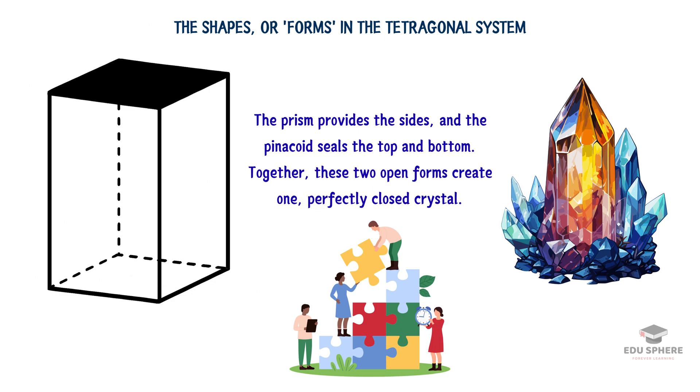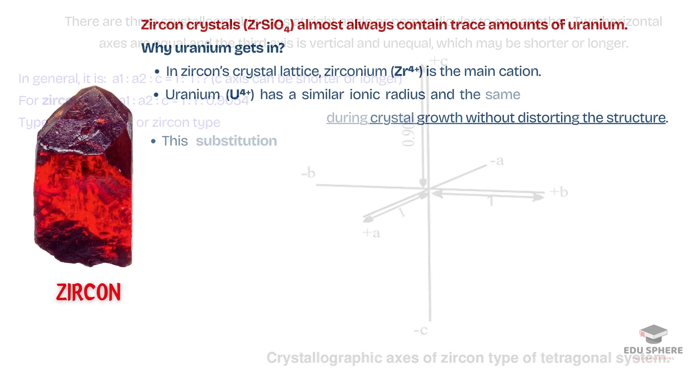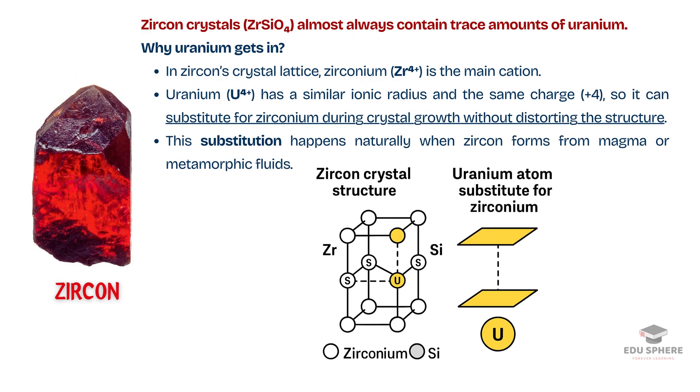The poster child for the tetragonal system is the beautiful mineral zircon. Gem quality zircon is a brilliant gemstone, but its true superpower is its durability. Zircon crystals can contain trace amounts of uranium and by measuring its radioactive decay, geologists can use zircon crystals to date the oldest rocks on earth, giving us a window into our planet's ancient past.